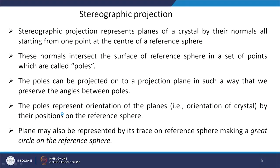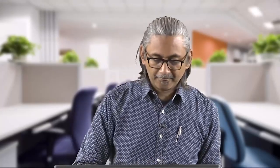When doing this projection we are preserving the angular relationship. In stereographic projection, basically every plane is defined by its normal. These normals of different planes all start from the centre of what we call a reference sphere, and they intersect the surface of the reference sphere at a set of points which are called poles.